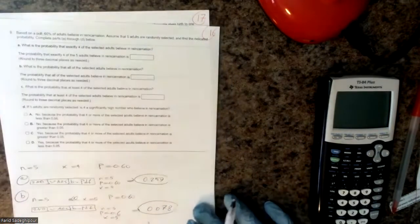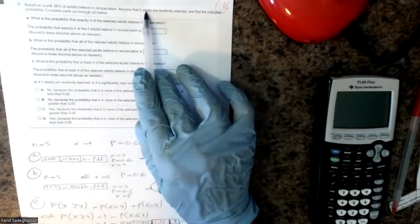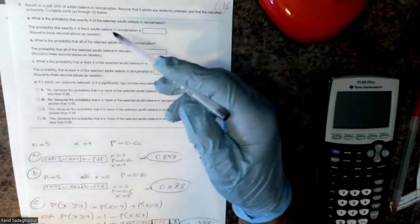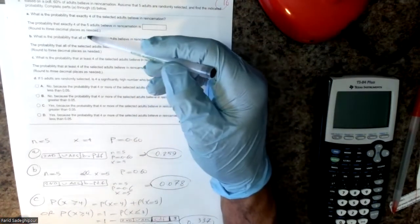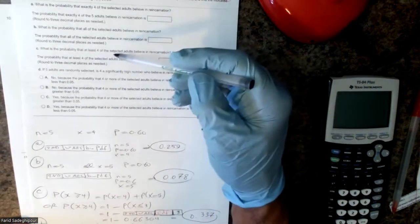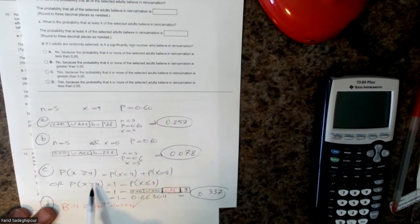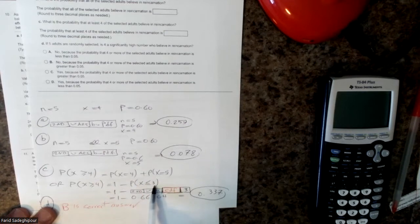All these problems follow the same formula, so it's easiest to use the calculator. Based on a poll, 60% of adults believe in reincarnation, so p equals 0.6 and n equals 5. Part A: probability of exactly four — x equals 4. Part B: probability of all five — x equals 5. Part C: probability of at least four means x equals 4 or 5, which equals 1 minus probability of x less than or equal to 3, using binomcdf(5, 0.6, 3).